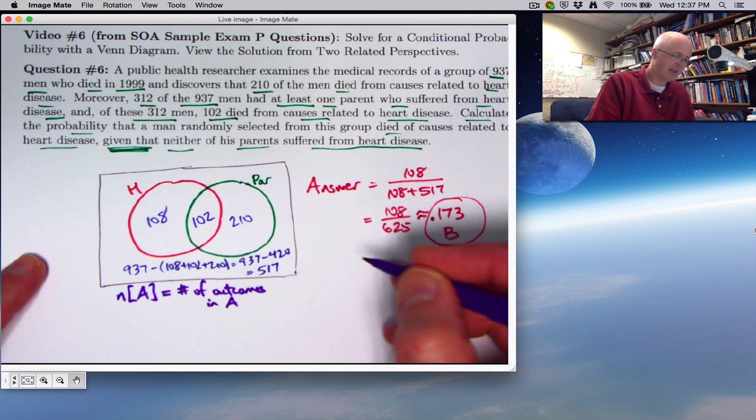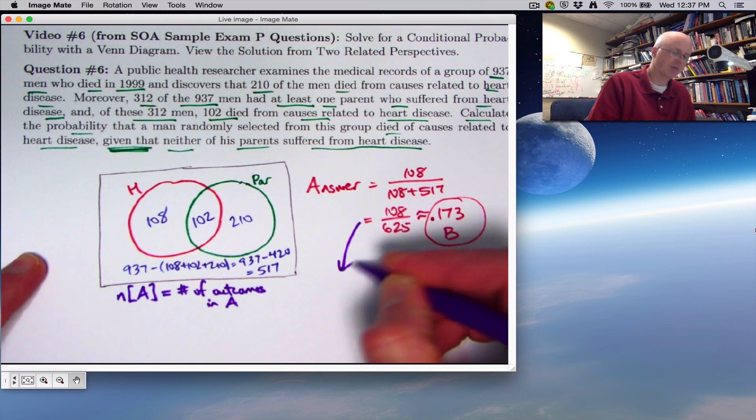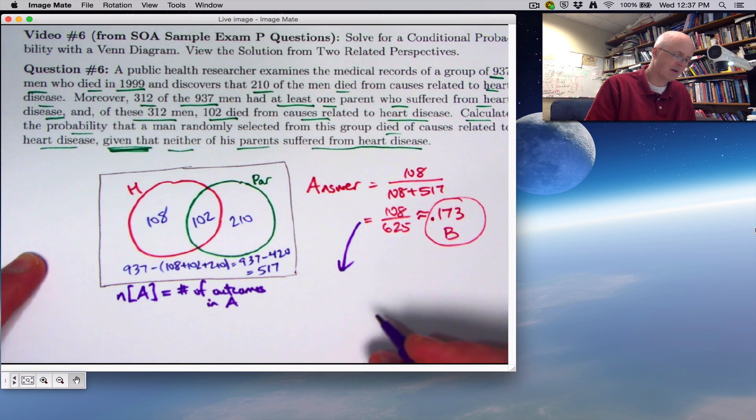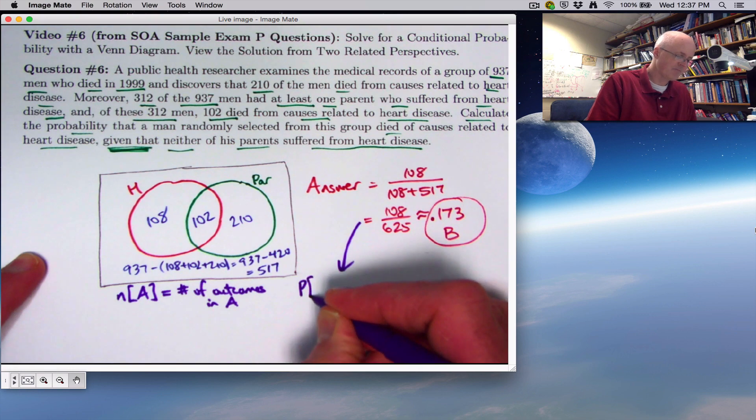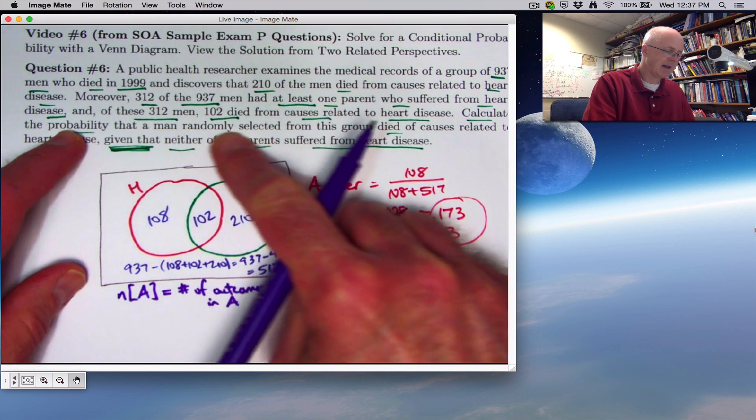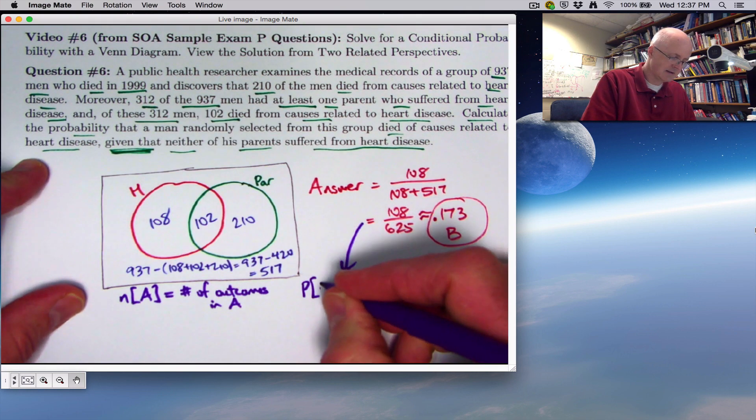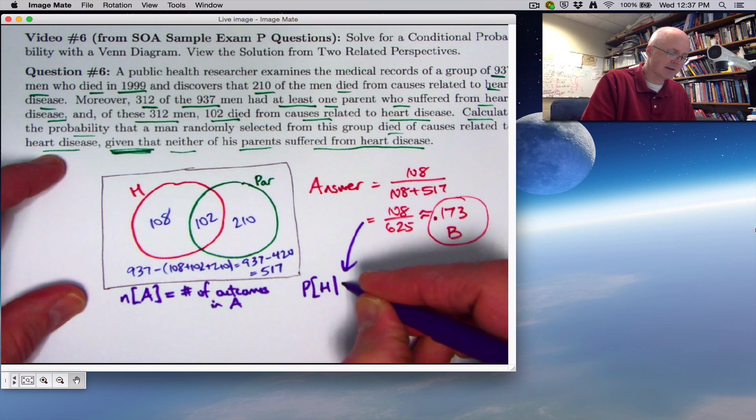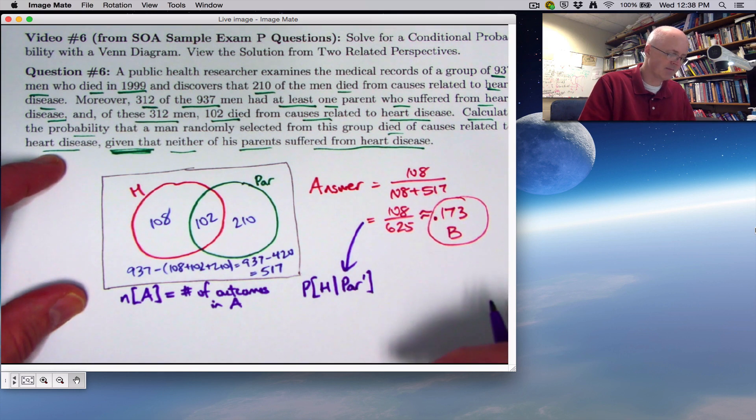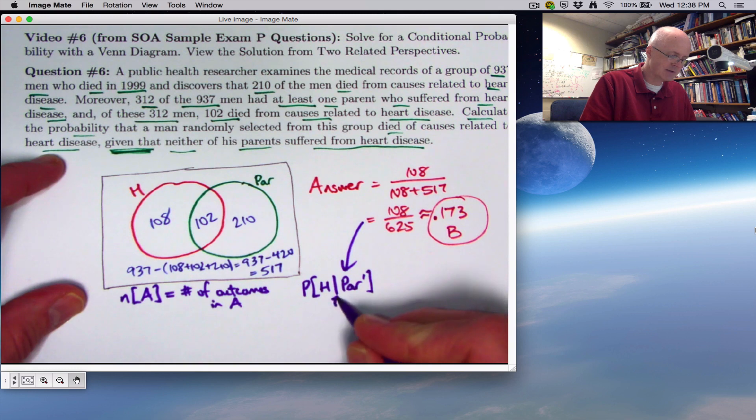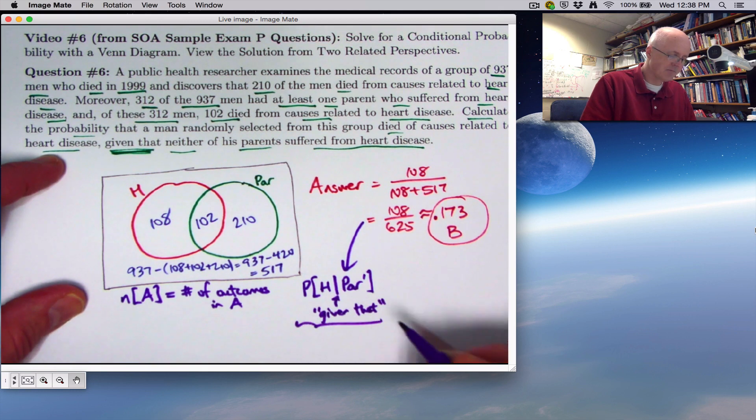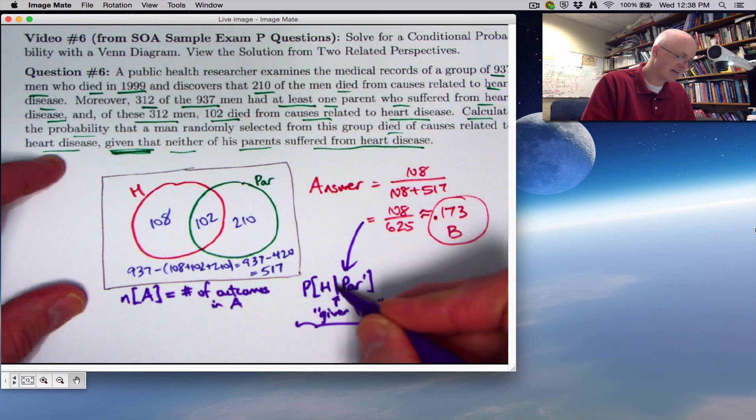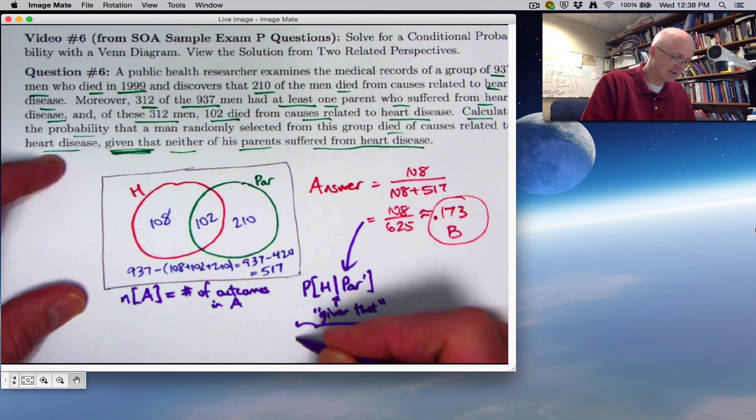Based on that notation and the conditional probability notation I introduced in video five, we can write the answer this way: the probability of a man dying from heart disease given that neither parent suffered from heart disease. You're outside the green circle, you're in the complement of PAR, which I denote by PAR prime. Some people denote by PAR c for complement. That is the conditional probability you're after. This vertical line means 'given that.' And the whole symbol here is called a conditional probability.